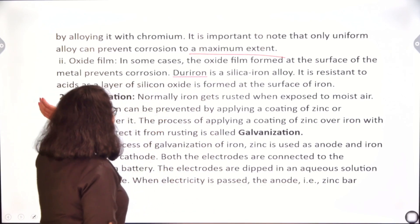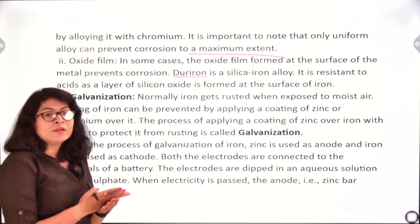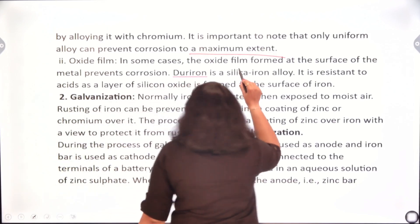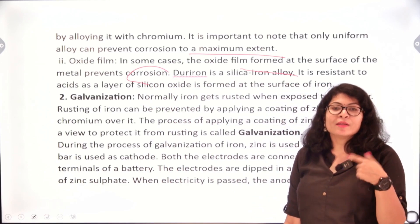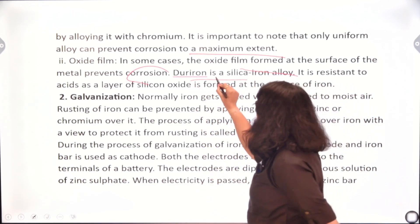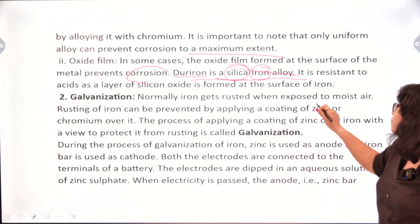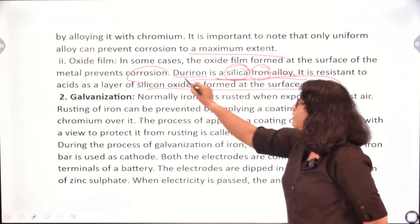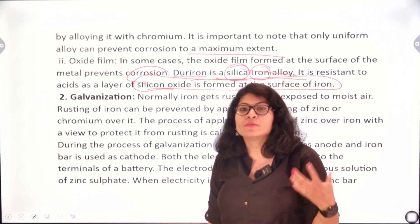Next is the oxide film method. Iron reacts with oxygen to form iron oxide (rust), and iron oxide is inert — it does not react further. So in some cases an oxide film formed at the surface of the metal prevents further corrosion; if the top layer of iron is corroded, the inner metal remains protected. Duriron is a silica-iron alloy — iron combined with silica — which is resistant to acids as a layer of silicon oxide is formed at the surface, protecting the inner iron from direct contact with acids.